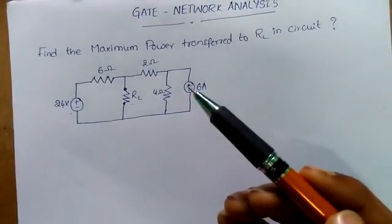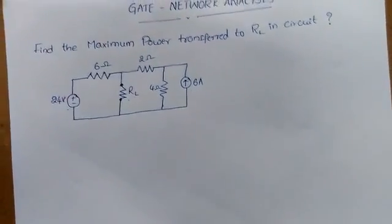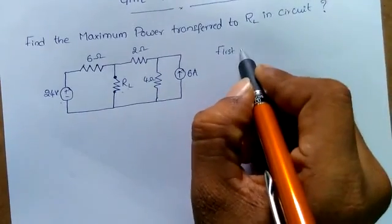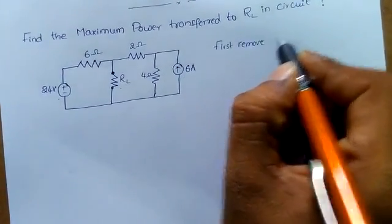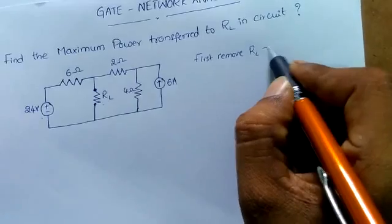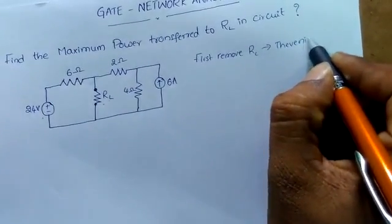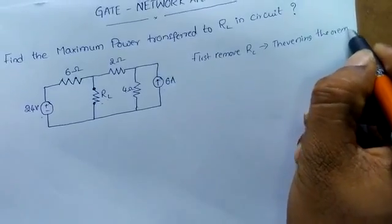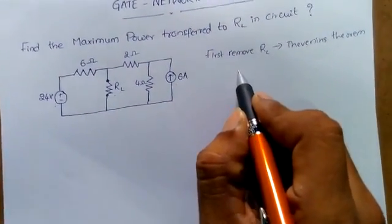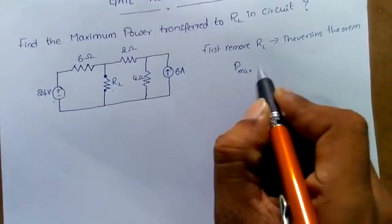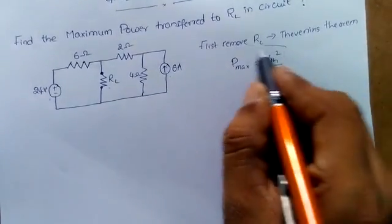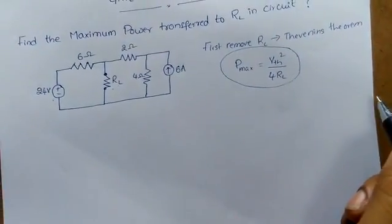We'll find out very simply — it is so simple, don't worry. First, we are going to use a method or theorem called Thevenin's theorem. By this theorem, we are going to calculate the maximum power transfer. According to this theorem, the power formula is: P maximum equals V Thevenin squared divided by 4 times RL. This is the formula for the maximum power transfer theorem.